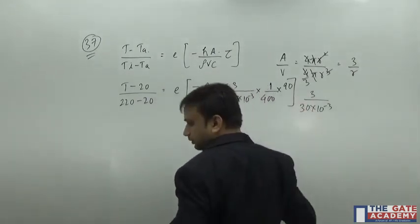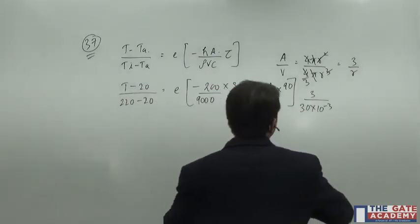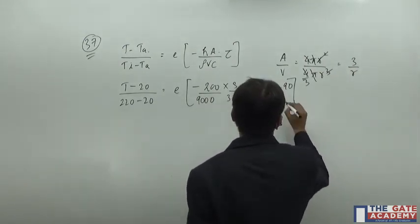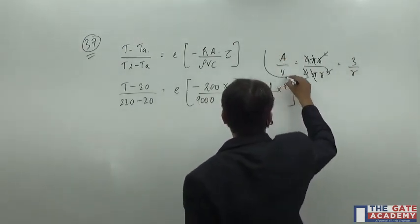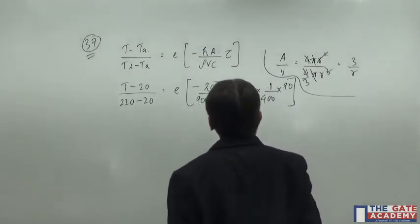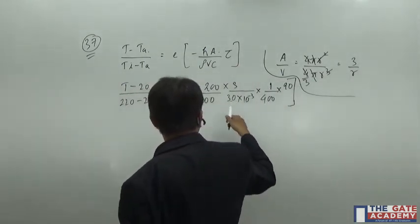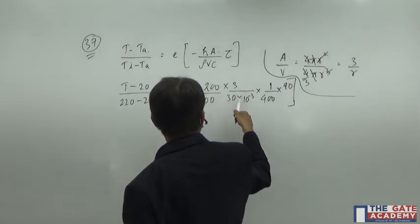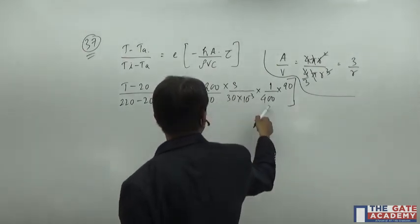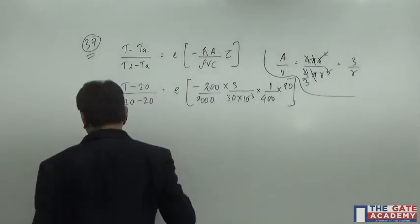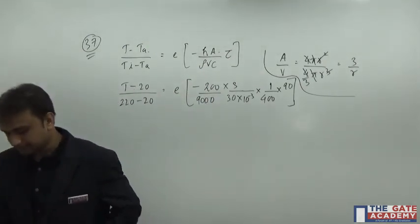Okay. So I am going to wrap this now. So I think we have covered everything. 200 is H, A by V, density, C and time. Now after solving all these things, what do we get? Let us calculate.